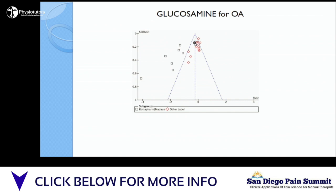Because the big trials are getting published, and the small negative trials aren't. But the small trials that really punch in effect size, they're making it into print.